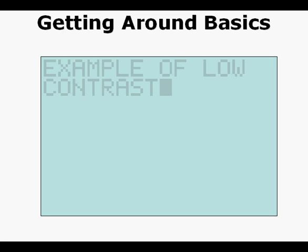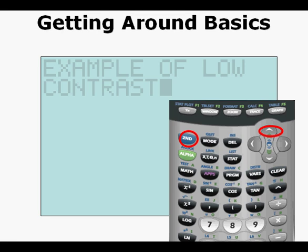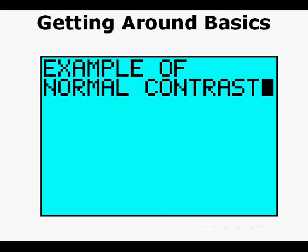And this view screen is an example of low contrast. If you see this low contrast, press second, up arrow, second, up arrow until you restore the contrast you want. Again, back to our example of normal contrast. If you keep making the screen darker, the view screen can blacken.